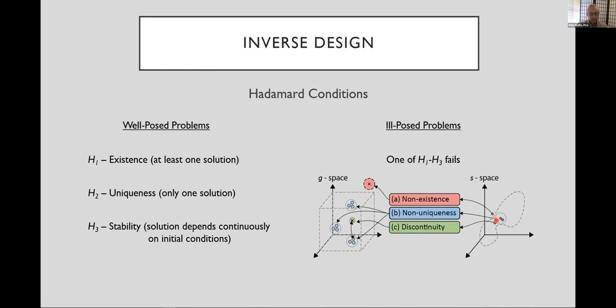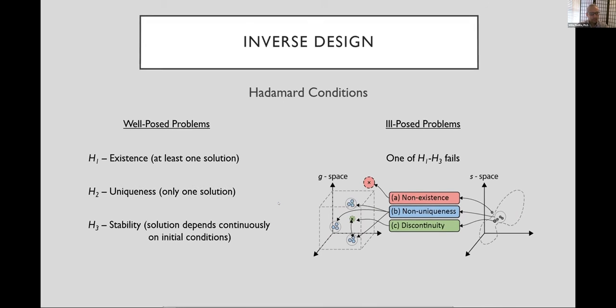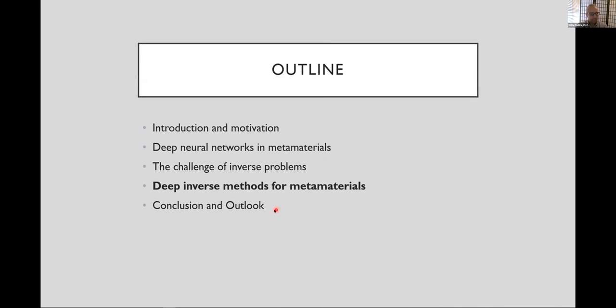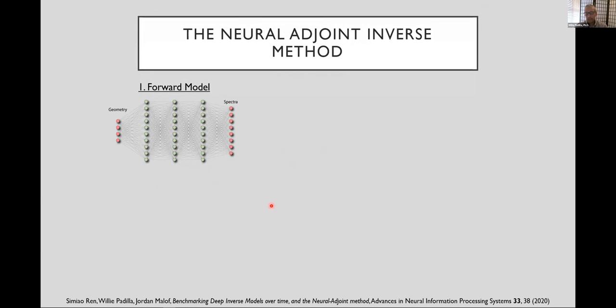And I'll just mention the second one, you may also specify some type of spectra that you want, but you may have some geometries which are really close to giving you that spectra that you desire, but they may lie in different regions and have different geometries. And often what your model might do is just to give you the average of those three geometries, which often is not a good solution. So those are some of the challenges.